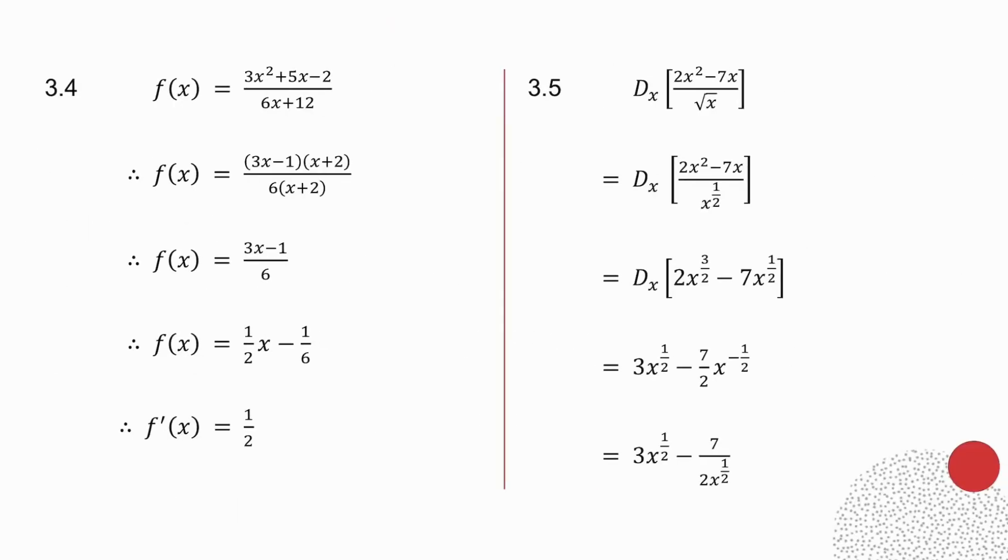In 3.4, I factorize the trinomial on the top, I factorize the common factor on the bottom. I cancel the x plus 2, and then I divide the 6 into each term at the top. So 3x divided by 6 is a half x, and then I get minus 1 divided by 6, so minus 1 sixth. Now notice, all I've done,